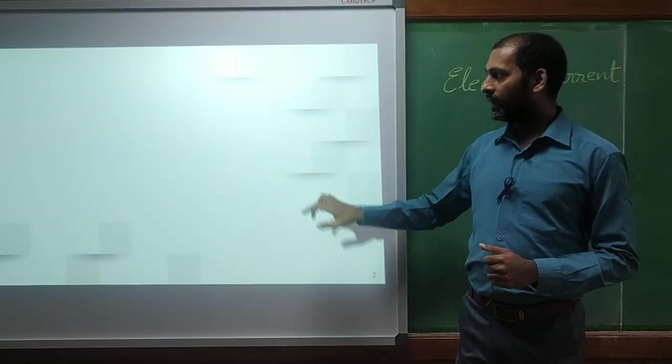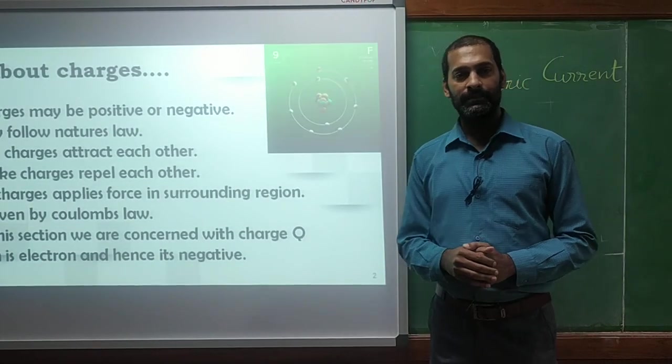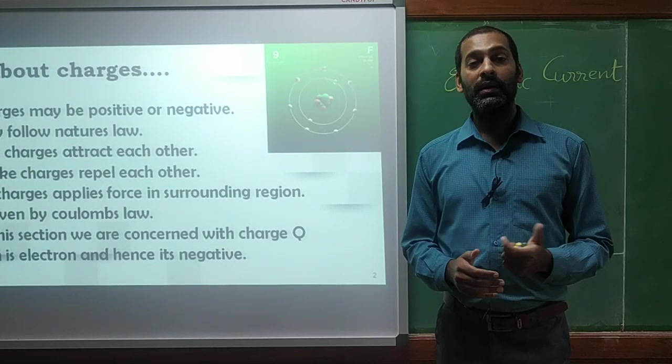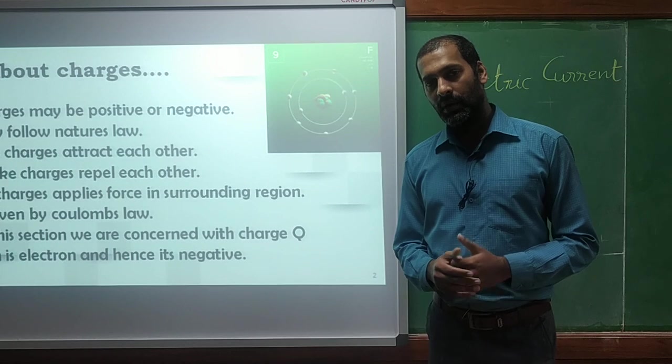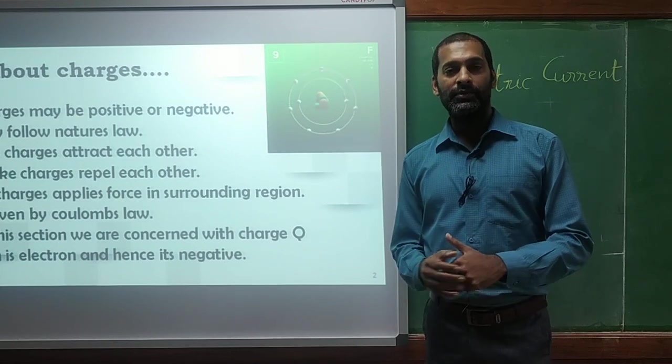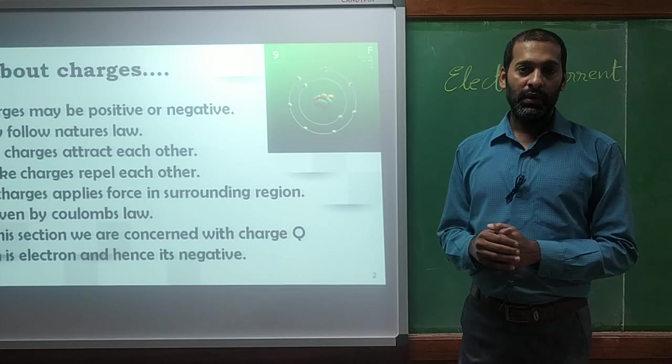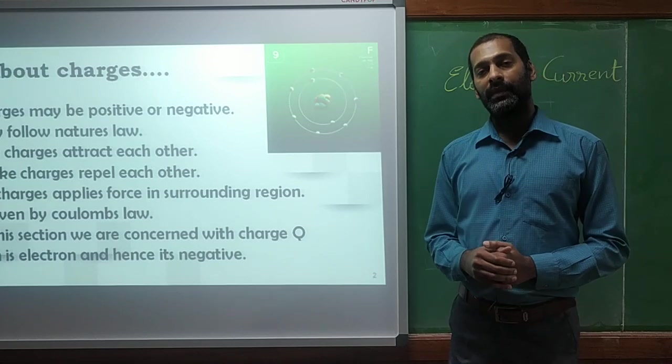We will discuss first the basis of everything. The basis of current is charges. Which charges normally we get in electric wire? Those are electrons. And what is charge on electron? They are negatively charged particles. So when negatively charged particles move, we get current inside conductor.